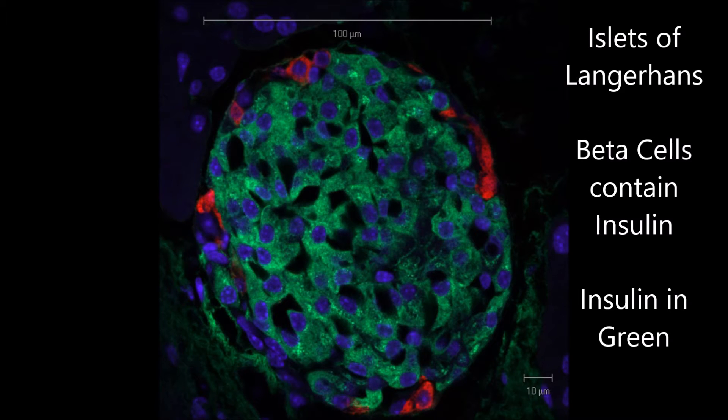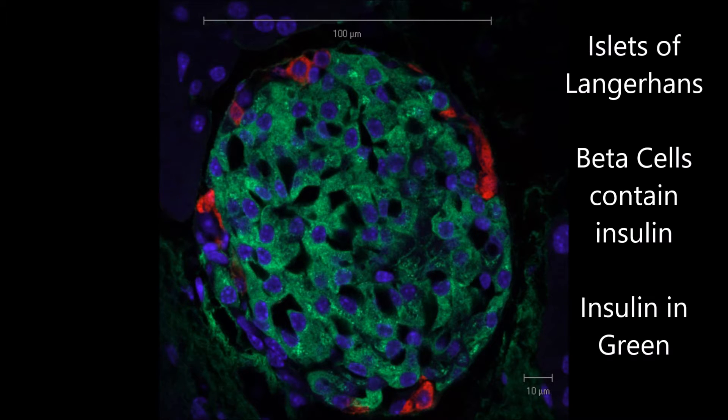So, these cells are clumped together in the pancreas to form islets of Langerhans, which are named for the German medical student who first described them. Now we're going to take a look at what exactly goes on in these beta cells to produce insulin.